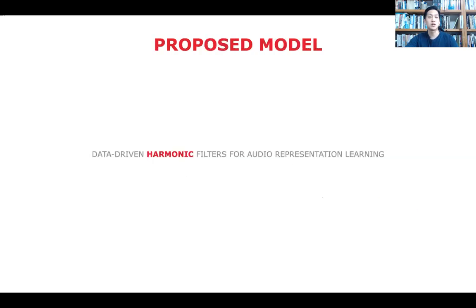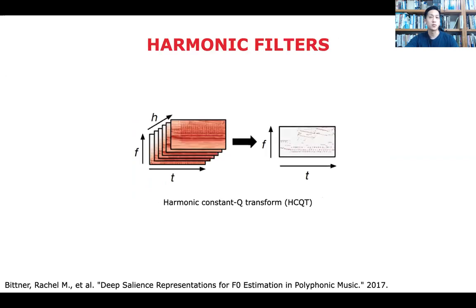Now let's take a look at the harmonic part. In the previous work, a harmonic constant Q transform HCQcT was successfully introduced for the F0 estimation in polyphonic music. By stacking CQTs harmonically, a convolution filter could capture spectrotemporal information in Y and X axis respectively, while capturing harmonic information through the channels or the Z axis of the HCQcT representation. However, this requires a preprocessing step to extract HCQcT and the hyperparameter Q has to be decided.